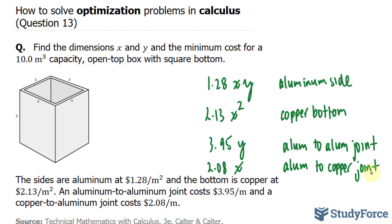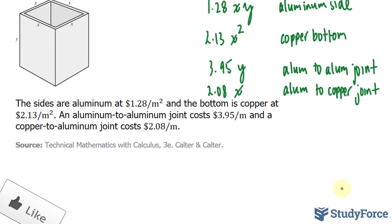Now that we have all the costs written out, what we can do is add up all of these costs for a total cost C. Therefore, the total cost is $1.28xy. And since we have 4 faces that represent the aluminum sides, I'll multiply this number by 4 plus $2.13 times x squared plus the aluminum to aluminum joint. We had 4 of those, so we'll multiply $3.95y by 4.